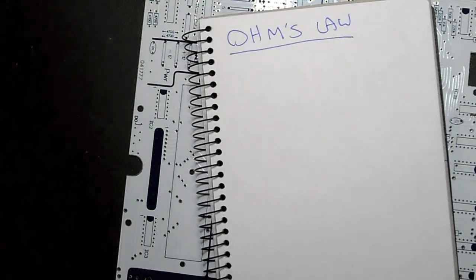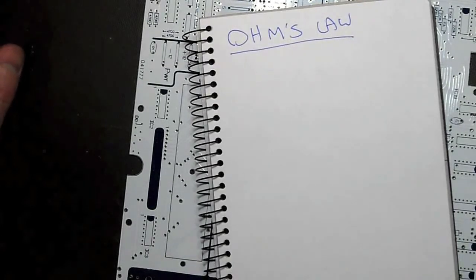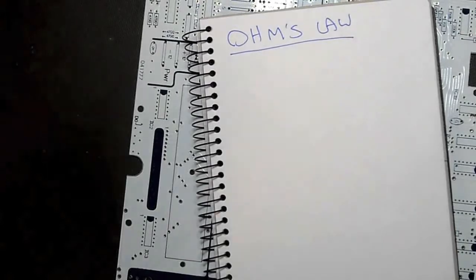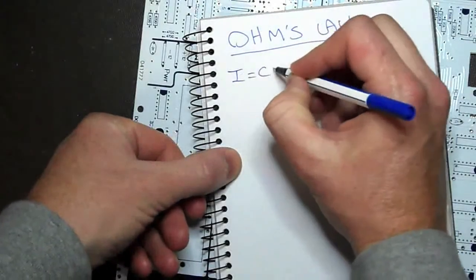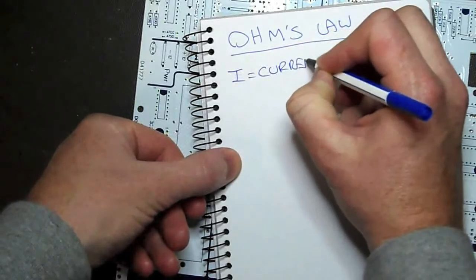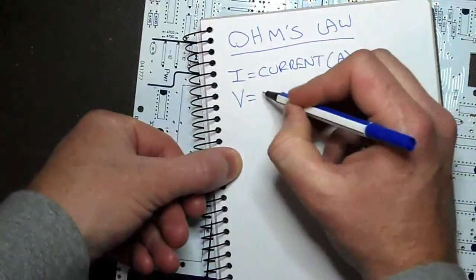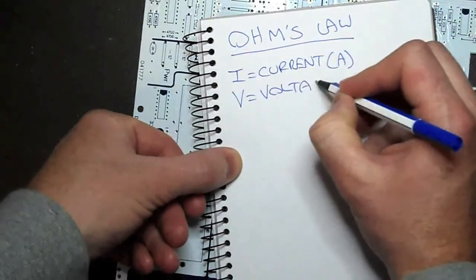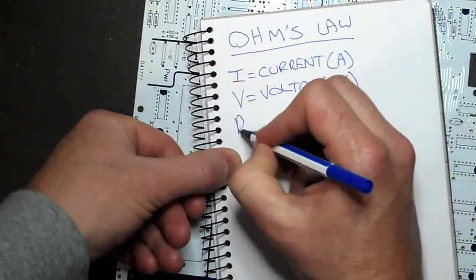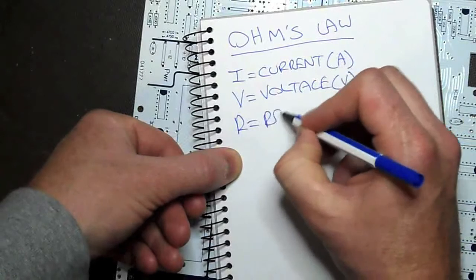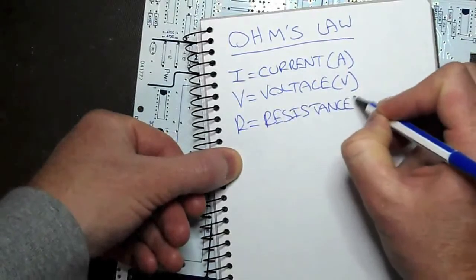Ohm's Law is so key in understanding electronics theory. It's basically the building block, if you like. So that's why I'm starting my first tutorial with this. Ohm's Law states that current is directly proportional to voltage and inversely proportional to resistance. Current, which is measured in amps, is directly proportional to voltage, which is in volts, inversely proportional to resistance, which is in ohms.